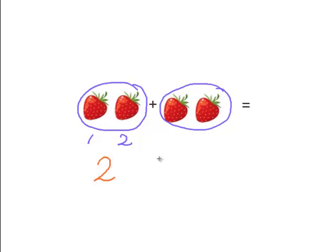So we have two strawberries on this side, plus how many strawberries on the right side? One, two. So again we have two strawberries. So two strawberries plus two strawberries equals how many strawberries? Four. Very good. So we have four strawberries in total.